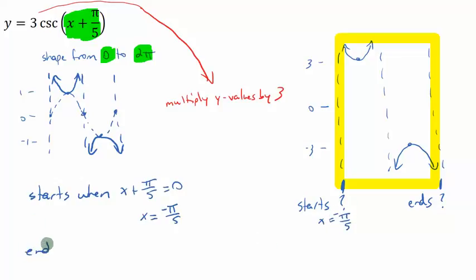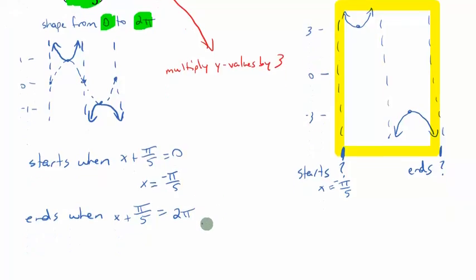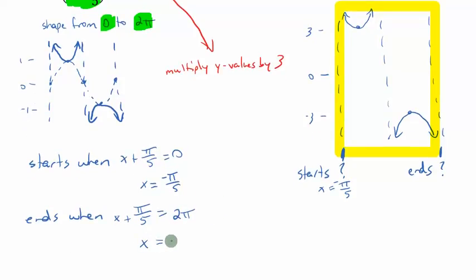It ends, my cycle ends, when my angle x plus π/5 equals 2π. So I need to subtract π/5 from both sides to get x by itself. 2π is the same as 10π/5, minus 1π/5 gives me 9π/5. So I know now that this is going to be x equals 9π/5 for the end of this cycle. So now I just need to take this and put it on a much nicer looking graph. Let's do that.